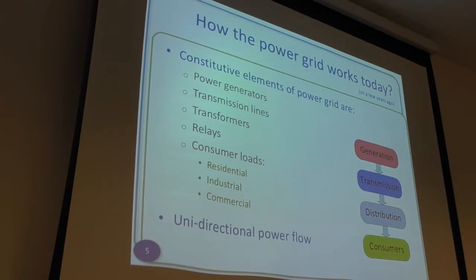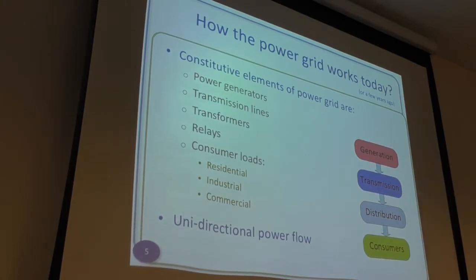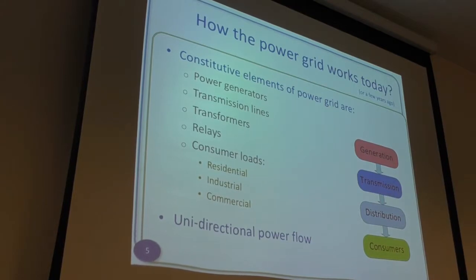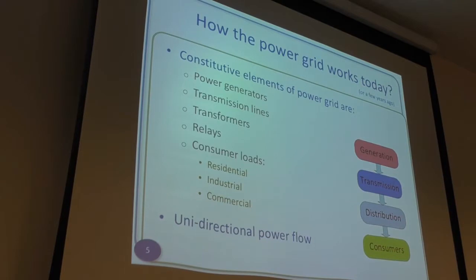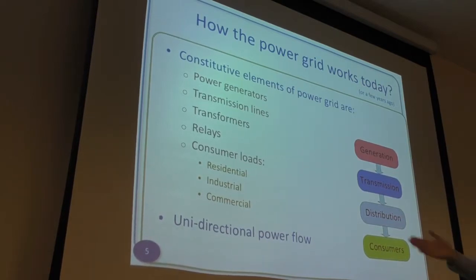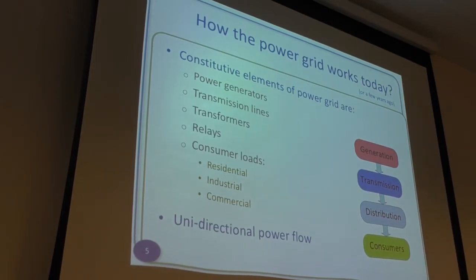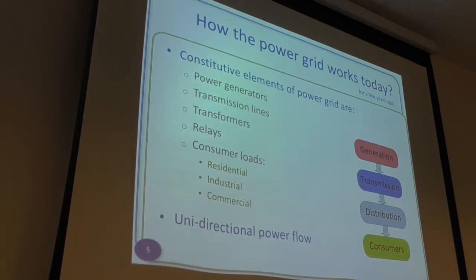The traditional power grid is basically a one-way system. You have different types of power generation — maybe a coal power plant — then a transmission network where power is transported across a country or across Europe, then a distribution network where you connect to individual households, industries, or commercial sites, and then the end consumer. The main characteristic is this one-way flow of power. In Denmark, for example, we have a lot of wind turbines.